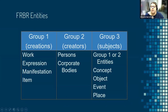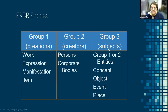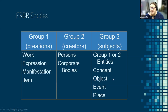FRBR came up with basically three groups. You have the creations — so Work, Expression, Manifestation, and Item. You have the creators — the people, the corporate bodies, which include conferences, ships, and all those things, families. A corporate body is technically a group of people who get together to do something as a corporate body. And then Group Three, which are subjects — which can be concepts like topics, objects, events, or places. You can have a book on Woodstock or on New York. But Group One or Two entities can also be subjects. So you can have a book that is a critical examination of the use of landscape in Moby Dick — in that case Moby Dick the Work would be the subject.